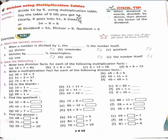You can see here: 9 goes into 54 six times. Meaning 54 divided by 9, so our answer is 6.